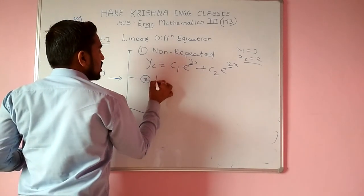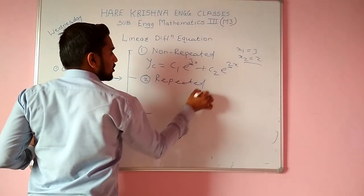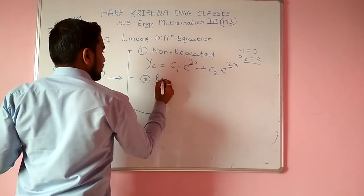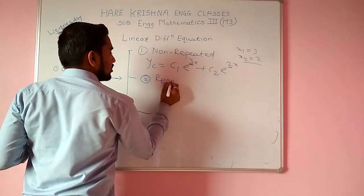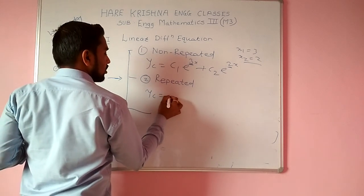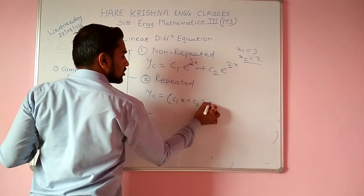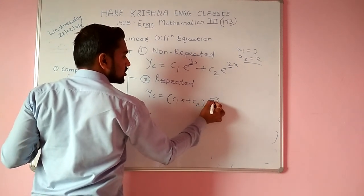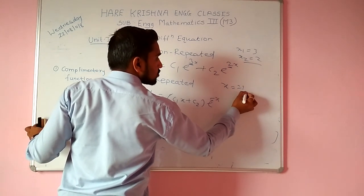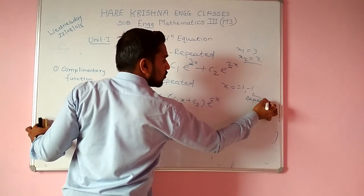Second one is repeated. The solution is: yc = (c1·x + c2)·e^(−x). Here we got x = −1, −1 — a repeated root.